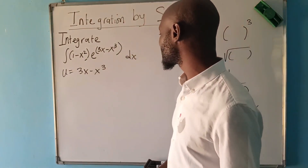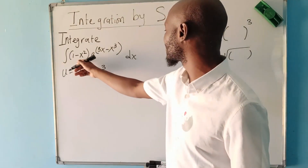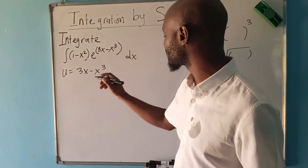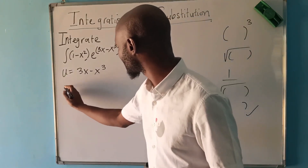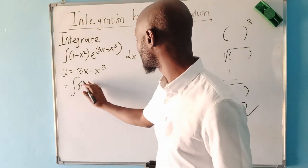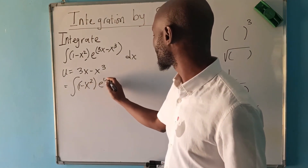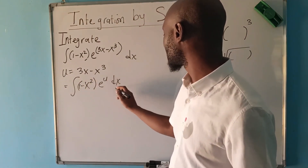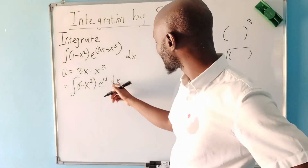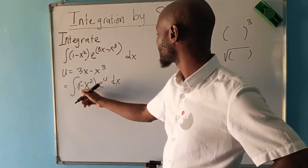What do we do next? We need to change everything so that we can simplify and have only u. Our integral looks like this: the integral of (1 − x²) times e to the power u, then dx. So we need to manipulate u so that from there we can have dx and make it the subject.